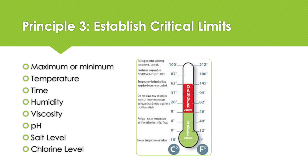Setting a maximum or minimum limit for processing parameters that will control the hazard, such as temperature, time, humidity, viscosity, pH, salt level, chlorine level, etc. — this is the CCP's critical limit. Corrective action must be conducted and all impacted products must be managed if this limit is ever exceeded.